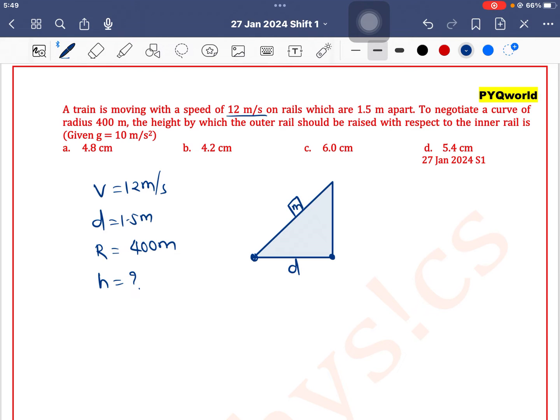The train is moving on this track with velocity v and negotiating a curve of 400 meters. We need to find the value of h.